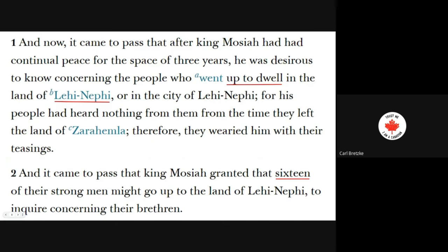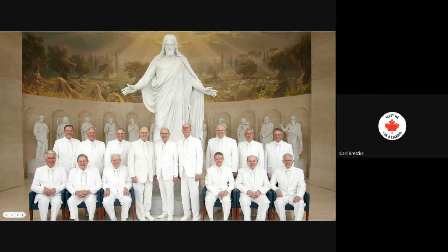Verse 1: 'And now it came to pass that after King Mosiah had had continual peace for the space of three years, he was desirous to know concerning the people who went up to dwell in the land of Lehi-Nephi, for his people had heard nothing from them from the time they left the land of Zarahemla. Therefore they worried him with their teasings. And it came to pass that King Mosiah granted that 16 of their strong men might go up to the land of Lehi-Nephi to inquire concerning their brethren.' Now this number 16 strong men is very interesting. If you look at the leader of their party as a prototype of Jesus Christ, then we have 15 strong men with the Savior — who lead the church today. I just thought that was intriguing.